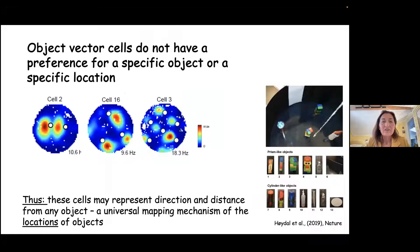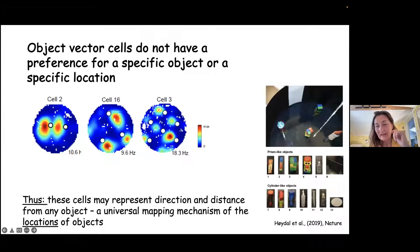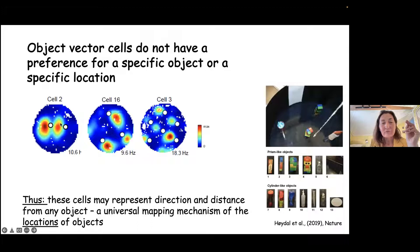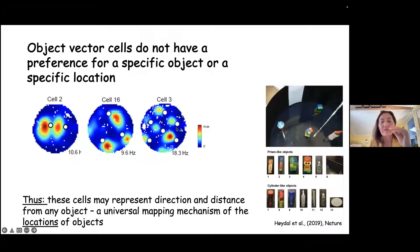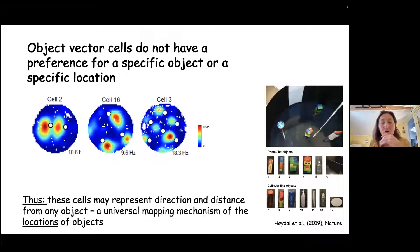We asked whether these cells are selective for one object only or can signal any object. This was tested with different objects. In cell 2, tested with two different objects, the fields are elicited by both objects. Cell 16 and cell 3 show the same thing. We conclude from these experiments that these cells appear to represent direction and distance from any object — a universal mapping mechanism for object locations.